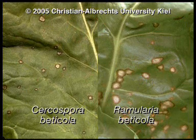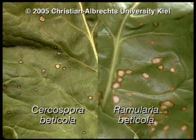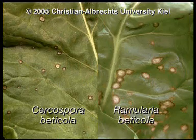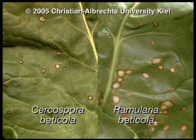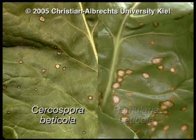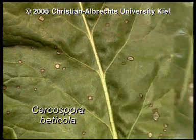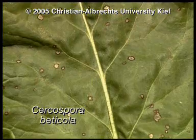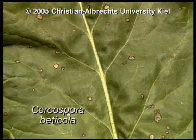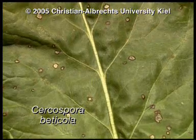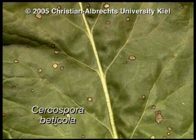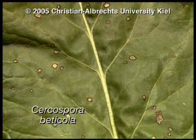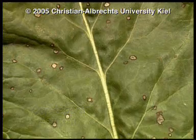The disease cycles of Cercospora Beticola and Ramularia Beticola are almost identical. The typical symptoms of Cercospora Beticola are circular spots with sharply defined reddish-brown borders.